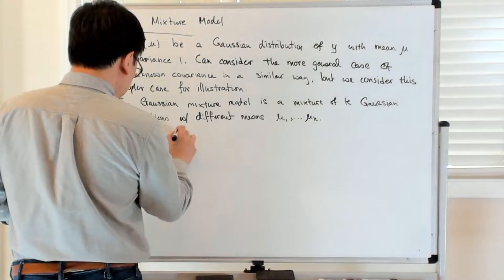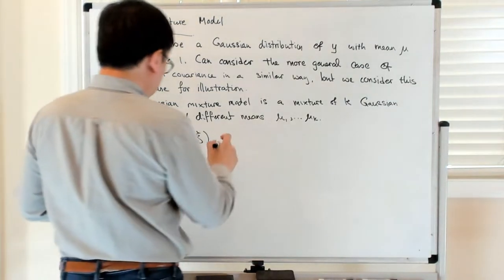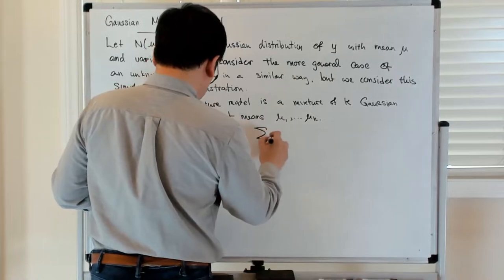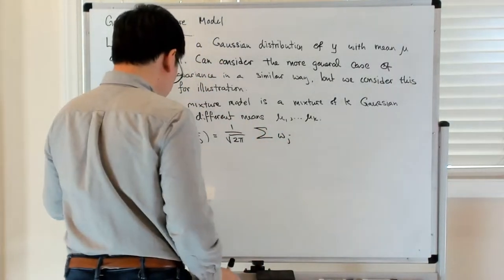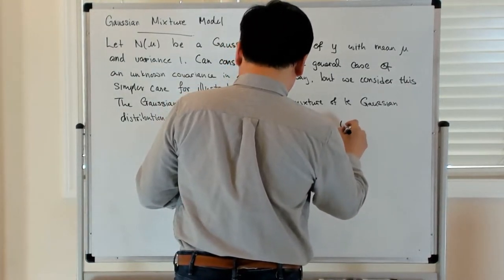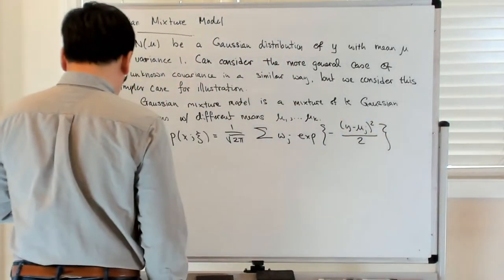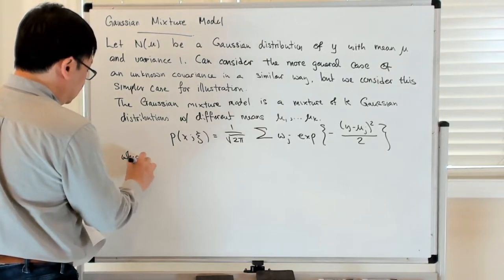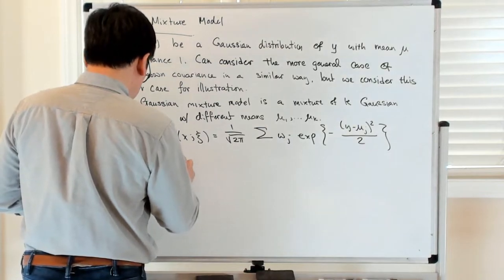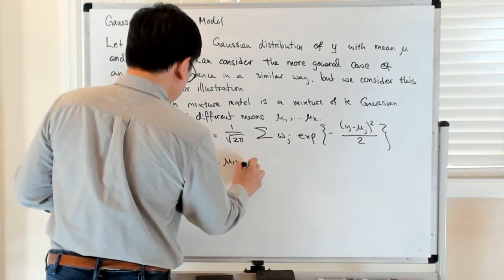So the probability distribution, which depends on x and parametrically depends on k Gaussians, is just 1 over square root of 2π times the sum of these weights w_j, and then exponential of minus (y minus μ_j) squared divided by 2, where the parameters are given by the weights w1 to wk and the means μ1 to μk.